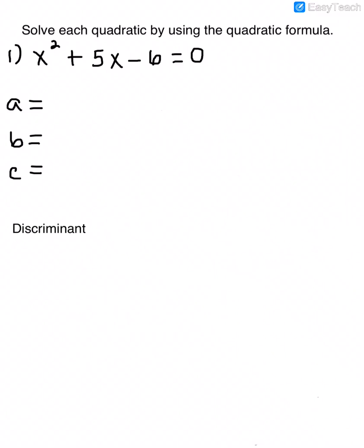Let's use the quadratic formula to solve a quadratic equation. When we look at this quadratic equation, it's already in standard form, so we can go ahead and pull out a, b, and c. a is the coefficient of x squared — if there's nothing in front, it's understood to be 1. b, the coefficient of x, is 5. And c, the constant, is negative 6. Make sure you pay attention to the signs of the numbers.